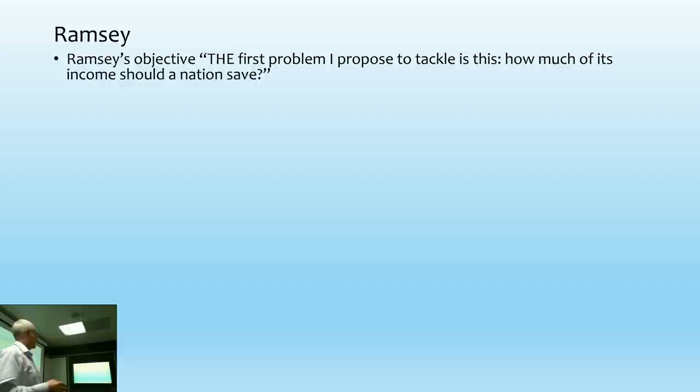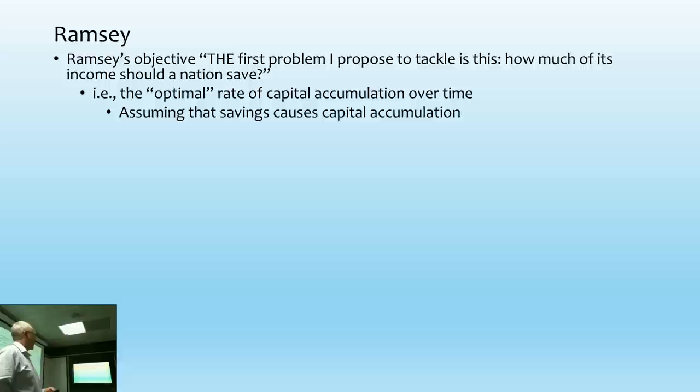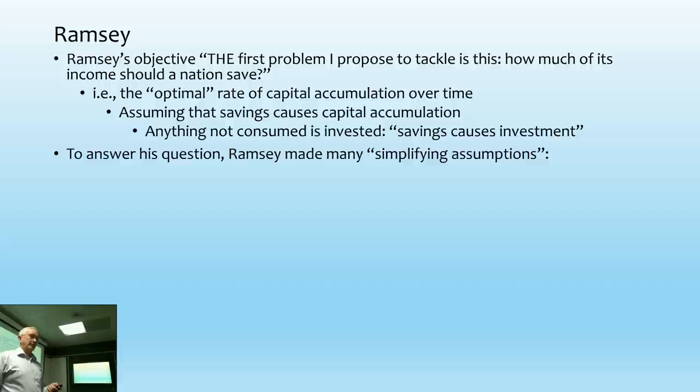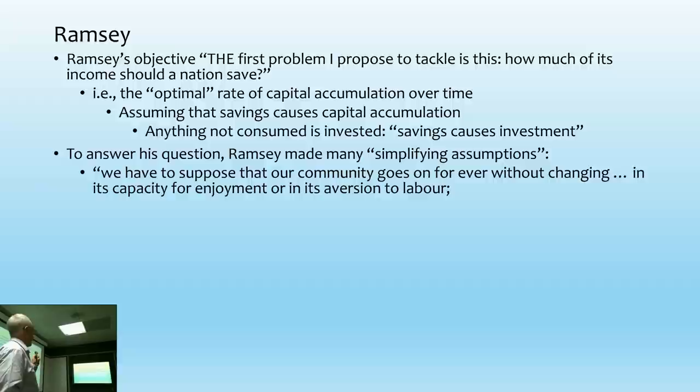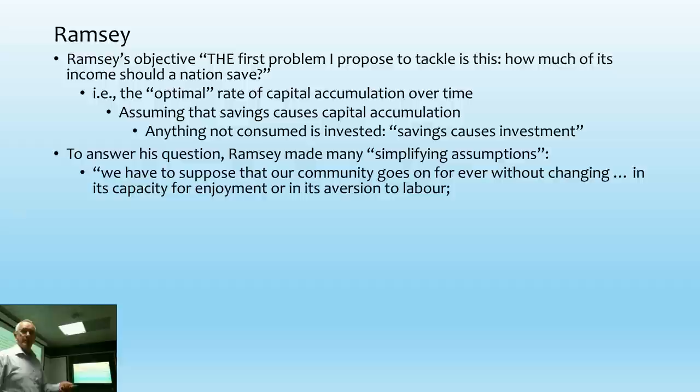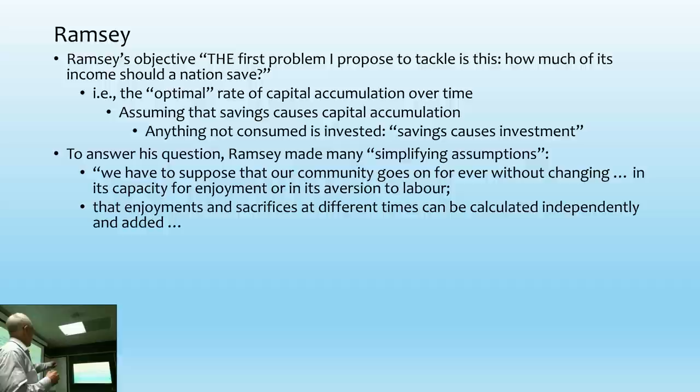The community goes on forever without changing in its capacity for enjoyment or aversion of labour — in other words, you can use the idea of utility: enjoying utility from leisure and earning income from labour, but not wanting to work, so you have negative utility from labour. Enjoyments and sacrifices can be calculated independently and added — meaning there's no problem with summing utility not just at a point in time but through time, and not just for one individual but for all individuals.